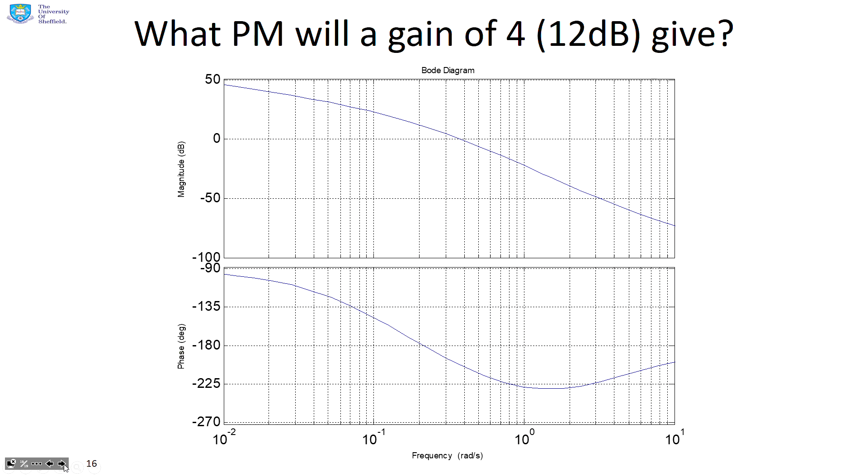What phase margin will a gain of 4 give? A gain of 4 is 12 decibels. So that's going to move this gain plot up by 12 decibels. But there's actually an easy way to do this. Rather than moving the gain plot up, you can move these ticks down. I'm now instead going to take this point minus 12 and draw a line across here at minus 12. If I move the blue plot up by 12 decibels, then this will become your gain crossover frequency. So now I can take that down and see what the phase is. The phase is about minus 225, and so your phase margin is minus 45 degrees. The minus because it's below the 180 degree line.